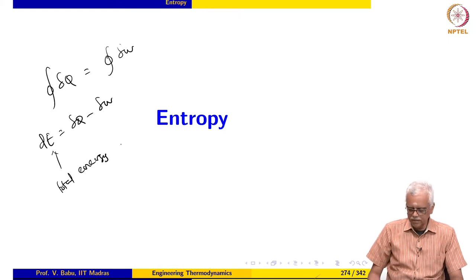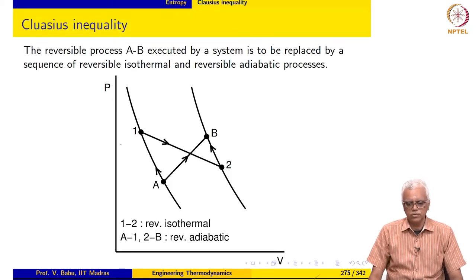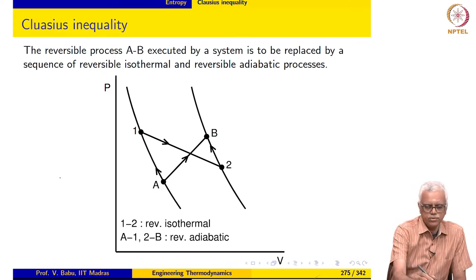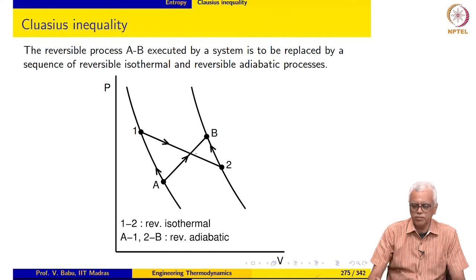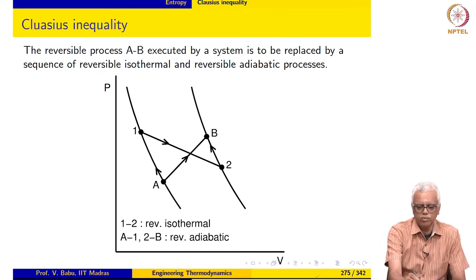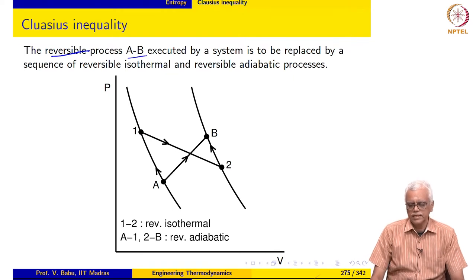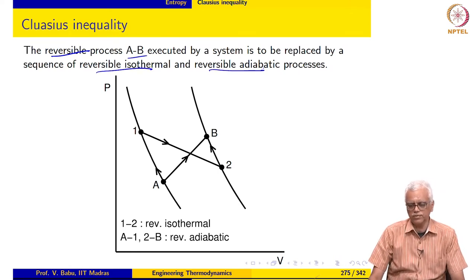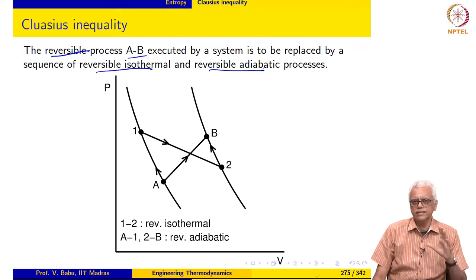We start by looking at the Clausius inequality. The idea is to first replace process AB, which is an internally reversible process, with a sequence of reversible isothermal and reversible adiabatic processes. You may recall that the Carnot cycle is composed entirely of reversible adiabatic and reversible isothermal processes.